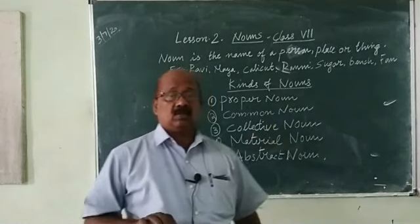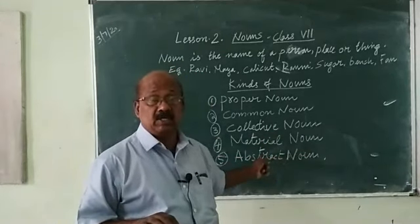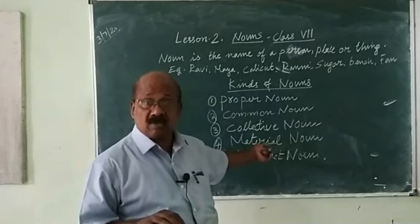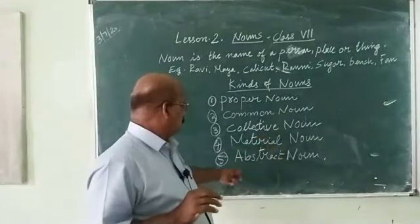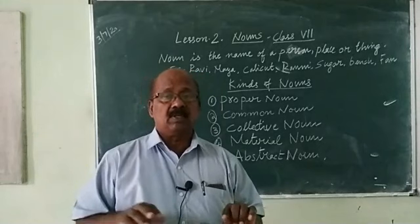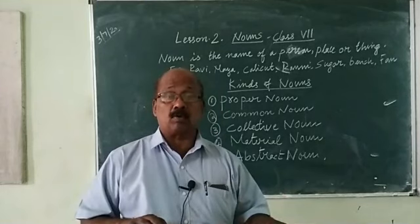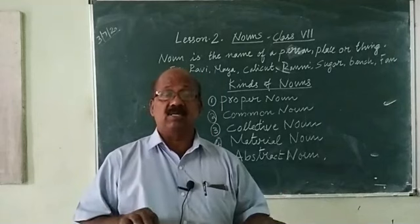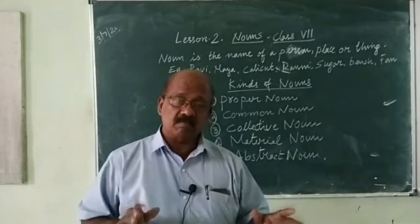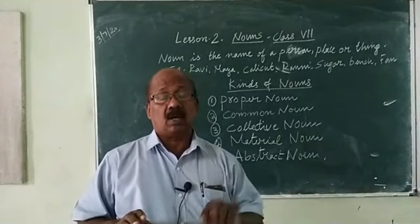Then, material noun. The word also refers to that name — material. Name of materials: wood, bench, sugar, oil, gold, silver — materials with which we make things. Then, abstract noun. Abstract noun shows the names of our feelings. Abstract nouns are not concrete — we can't see them, we cannot touch them. For example: sincerity, determination, love, sympathy, pity. Can you see that? No. Can you touch it? No. Such a noun is known as an abstract noun.